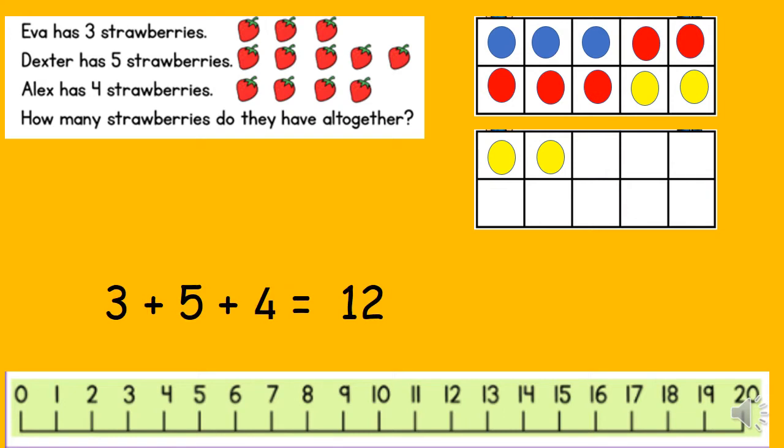We also know that our equation will say three add five add four. We can use our number line to find out the answer. Starting at three, we can jump on five and then jump on four, and we find the answer is 12. Those are just two of the ways that we could find the answer to this calculation.